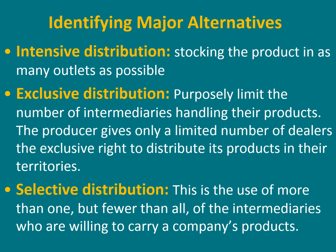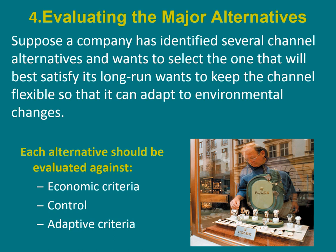Intensive distribution means stocking the product in as many outlets as possible. Exclusive distribution involves limiting the number of intermediaries handling the product. Selective distribution is the use of more than one, but fewer than all, of the intermediaries who are willing to carry a company's products.